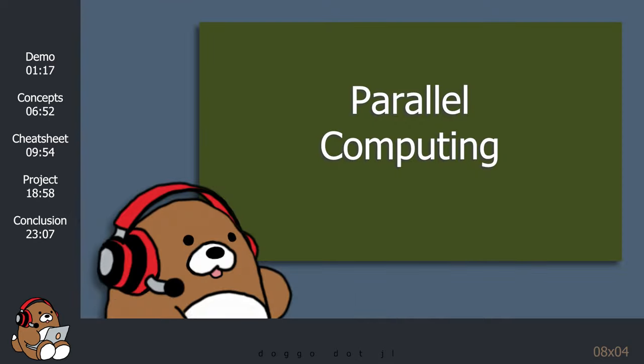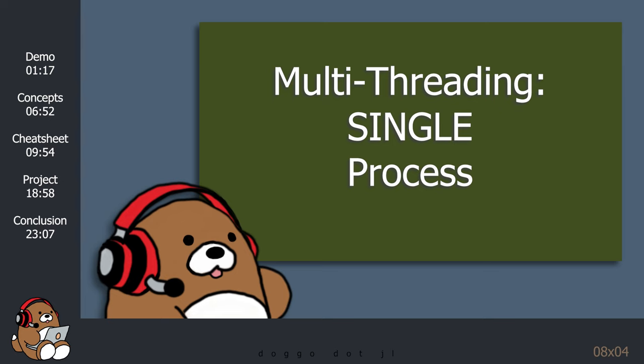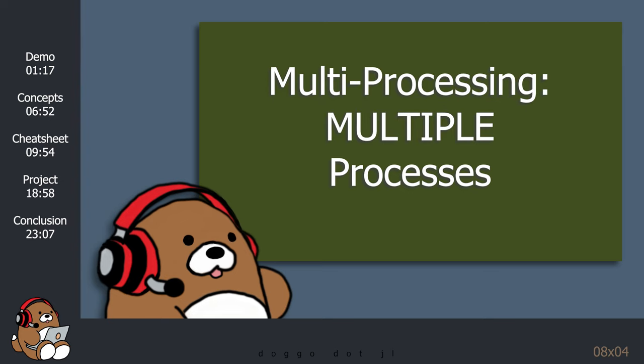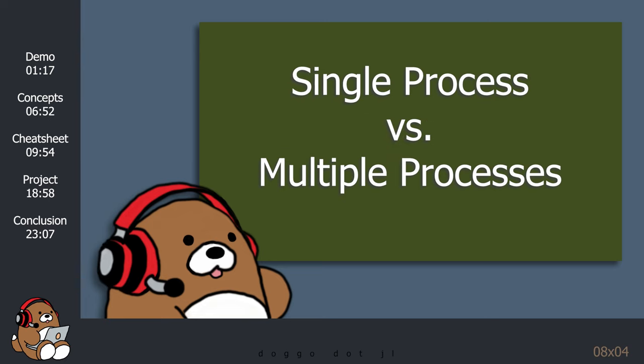Like multithreading, multiprocessing is a form of parallel computing that can be performed on most modern computers. Multithreading means running a single process across multiple threads. Multiprocessing means running multiple processes either on a single computer or across multiple computers. Let's take a look at a simple demonstration.